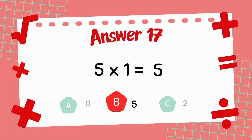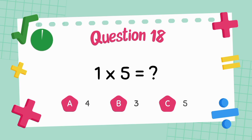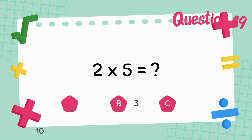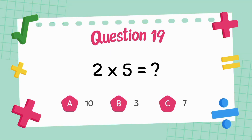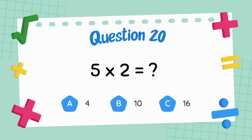What is one multiply five? The answer is five. What is five multiply five? The answer is ten. What is five multiply two?